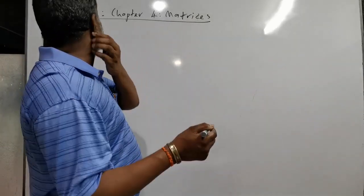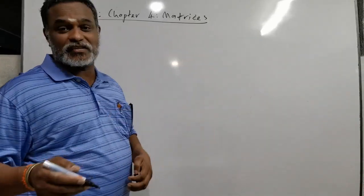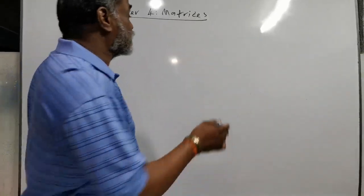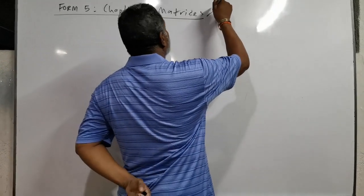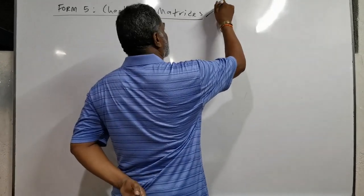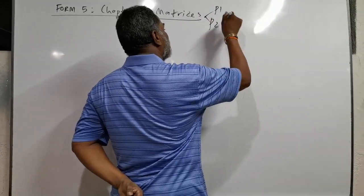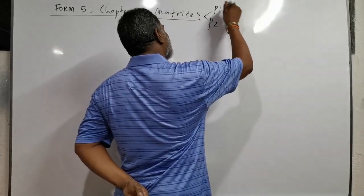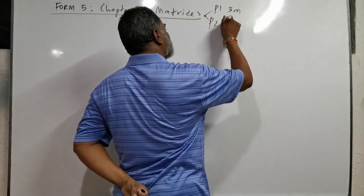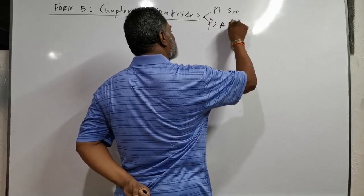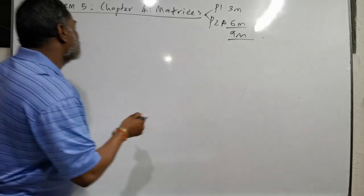Good evening. Today I am going to do Form 5 Chapter 4, Matrices. It is very important in SPM — every year they will ask in Paper 1 and Paper 2. Normally it carries 2 to 3 marks in Paper 1, and Paper 2 Section C carries 6 marks. All together 9 marks, so it is very important.